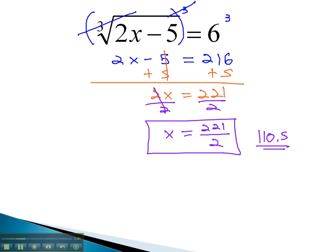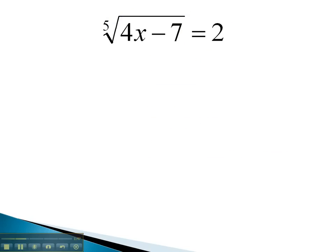Let's try another example where we get rid of an odd root by using an odd exponent. In this problem, we have a 5th root. We can get rid of a 5th root with a 5th power on both sides. 5th power and 5th root are inverses, leaving just the 4x minus 7 equals 2 to the 5th, which is 32.